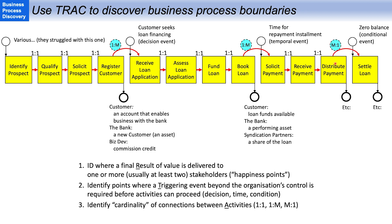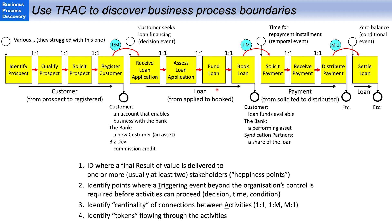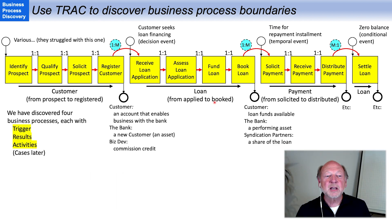The final technique is to look for the tokens. The token is the work item that the process works on, transforming or changing its state. The first one is customer, transforming from a prospect to registered. The next is the loan, going from applied to booked, then a payment, and then the loan again. It's really starting to look like we have identified four business processes.